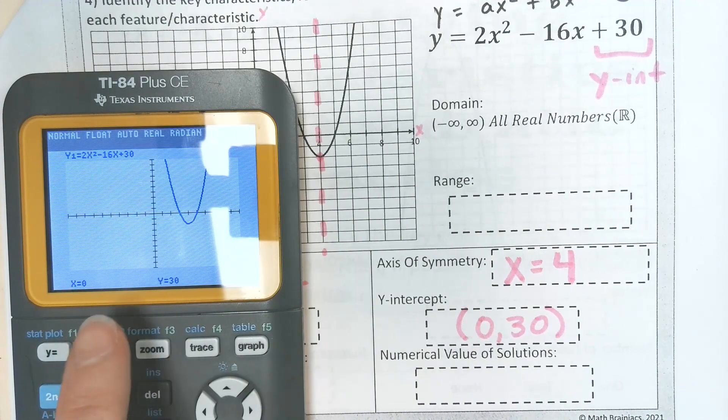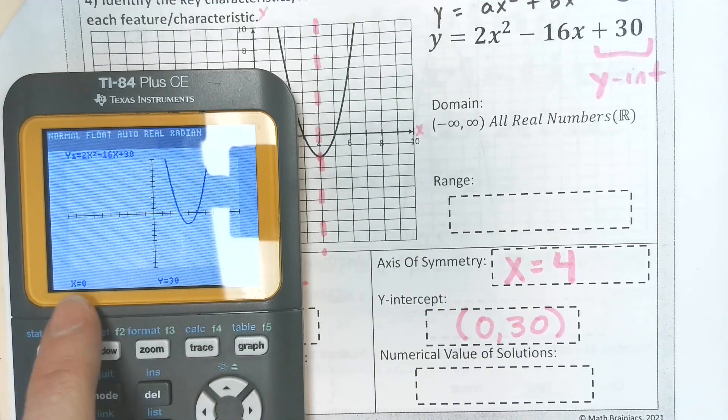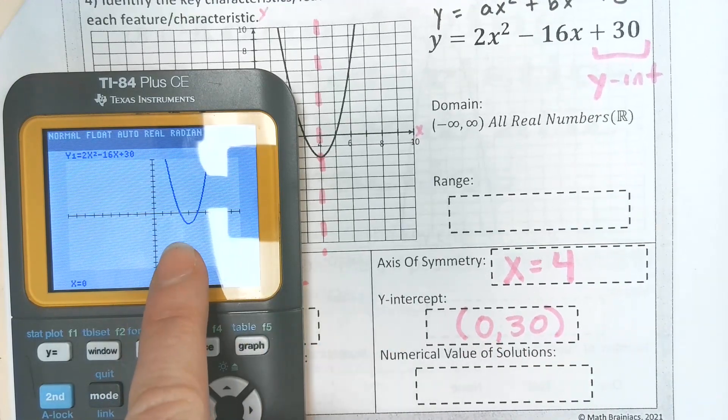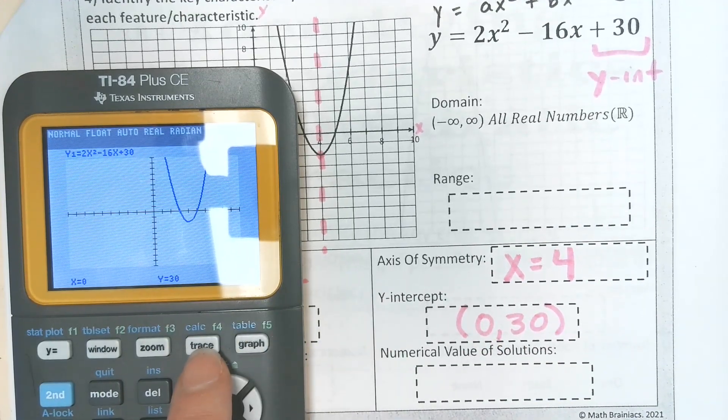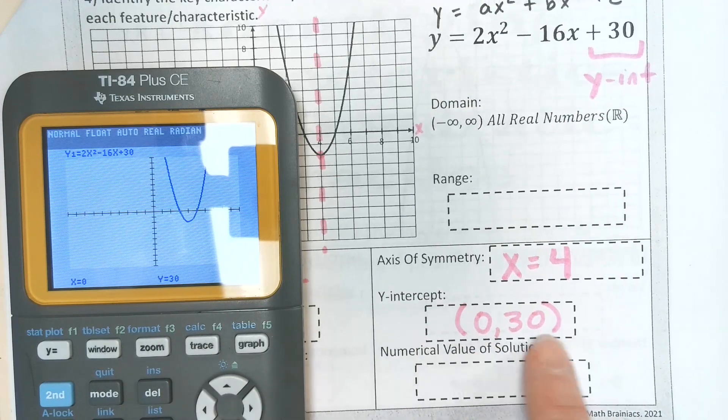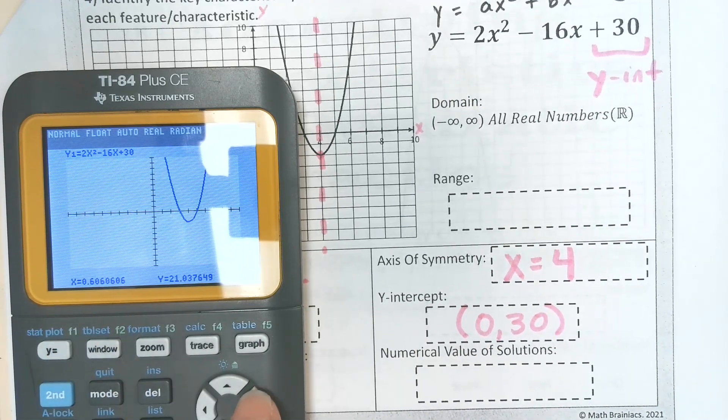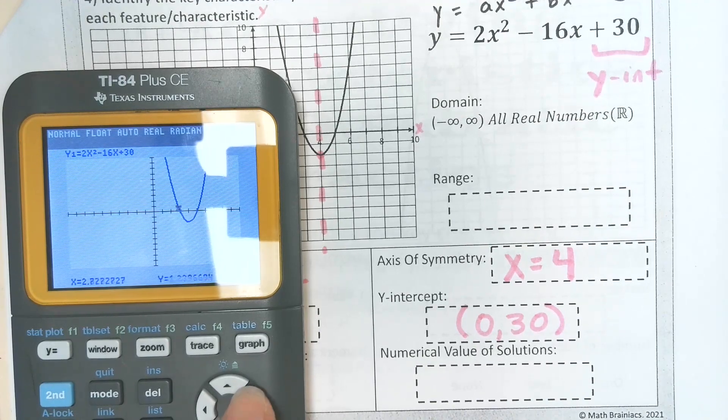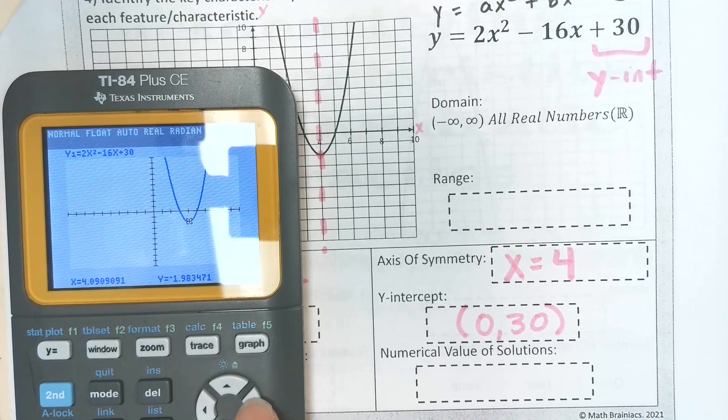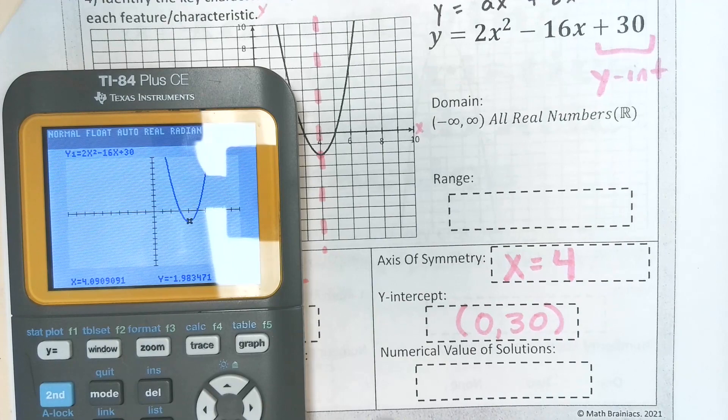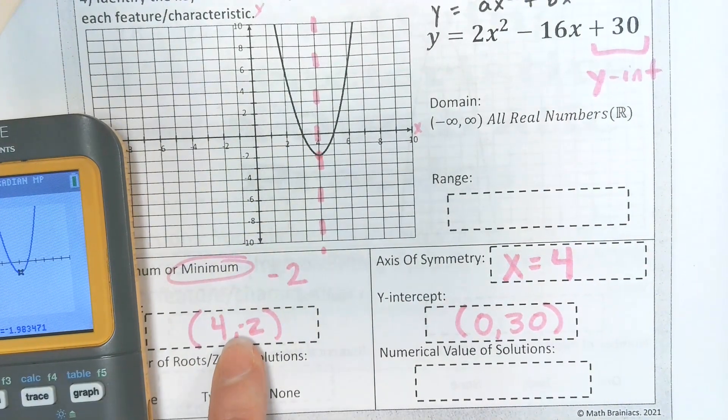If I hit trace, look how it gives me that y intercept (0, 30). Every time when you have a graph and you hit trace, it will always go to your y intercept, which in this case was (0, 30). You can arrow and you can find different points on the graph. You can look and see what's that lowest point. And if we were to round that, that'd be 4 and negative 2, which is our vertex right there.